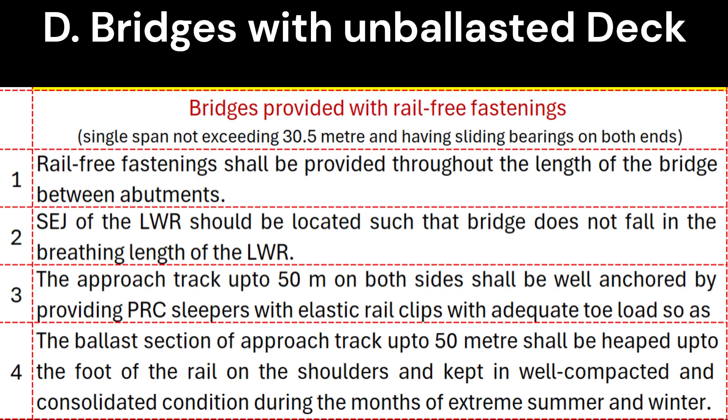9. Bridges with unballasted deck — bridges provided with rail-free fastenings. In this case, single span not exceeding 30.5 meters and having sliding bearings on both ends: 1. Rail-free fastenings shall be provided throughout the length of the bridge between abutments. 2. SEJ of the LWR should be located such that the bridge does not fall in the breathing length of the LWR. 3. The approach track up to 50 meters on both sides shall be well anchored by providing PRC sleepers with elastic rail clips with adequate toe load so as to arrest creep.